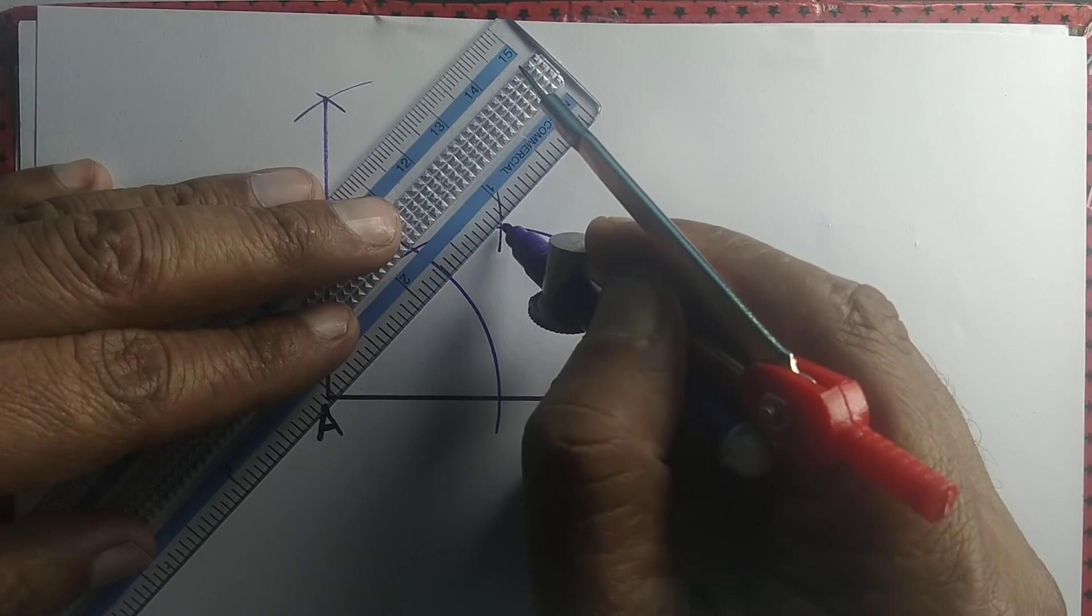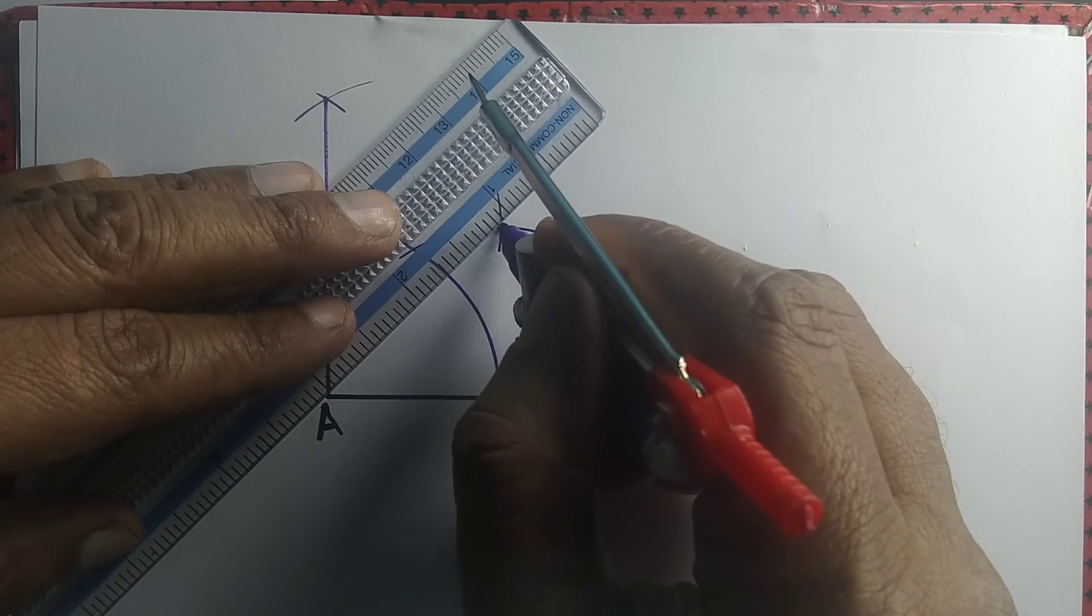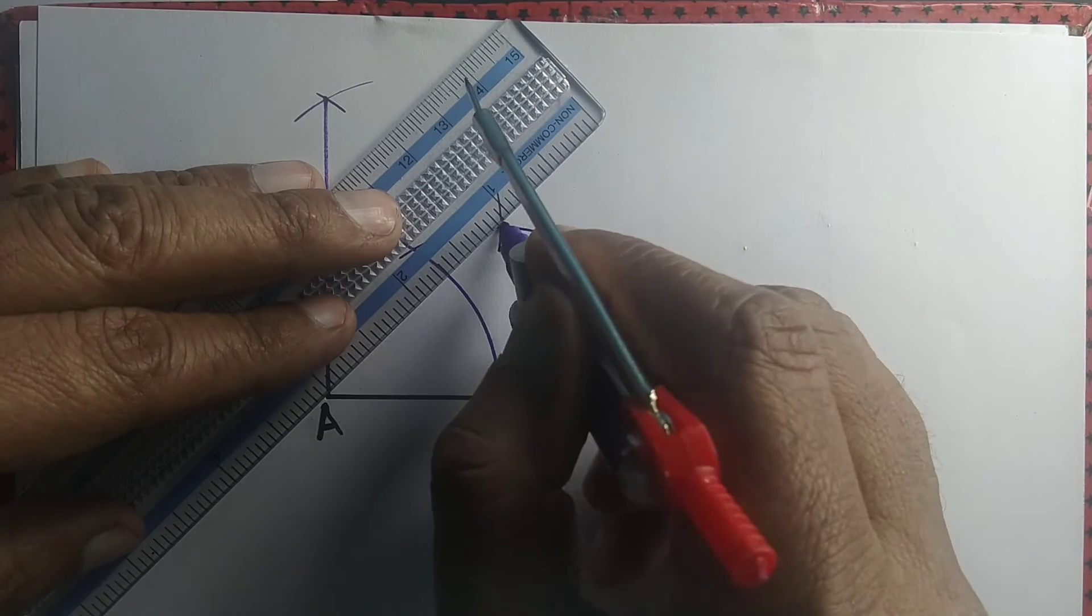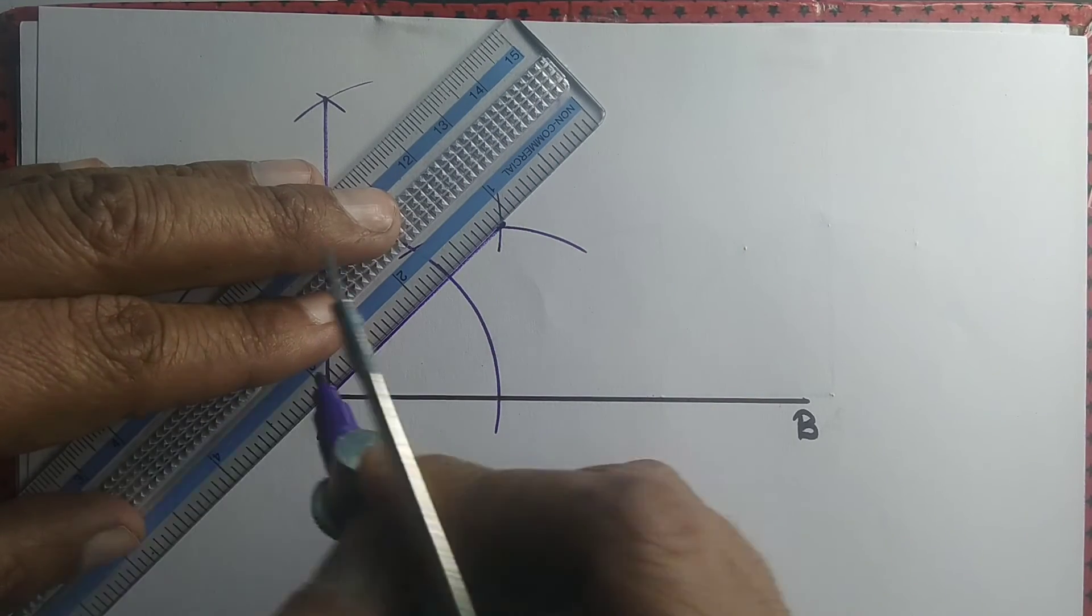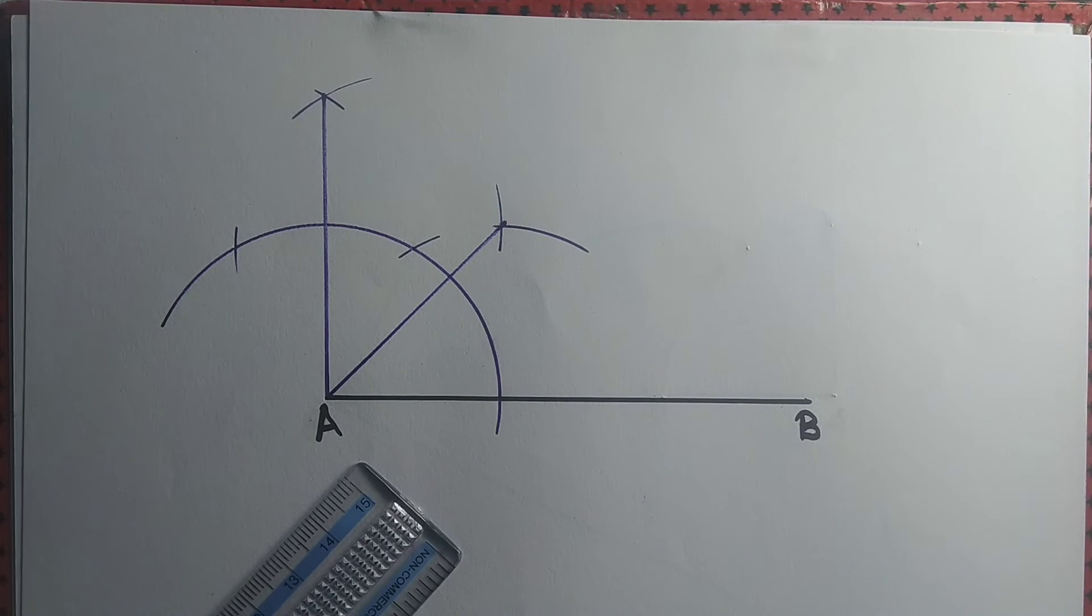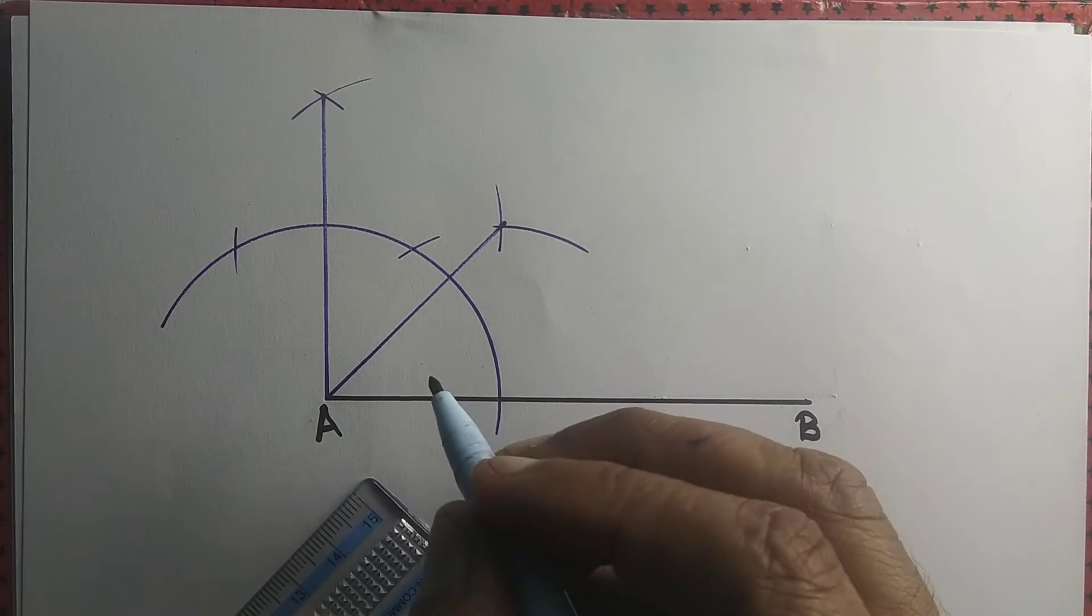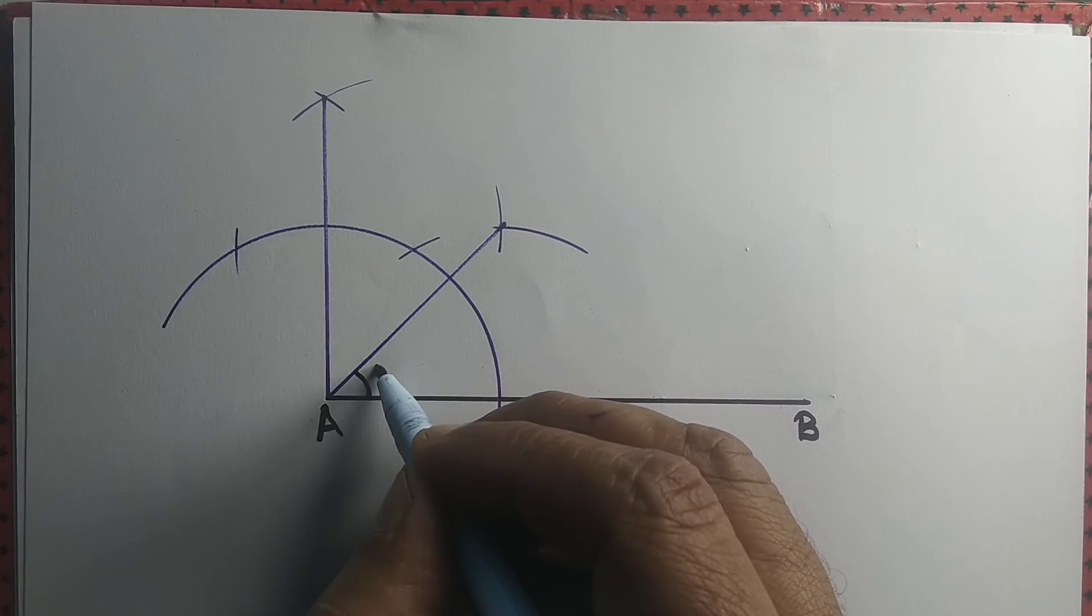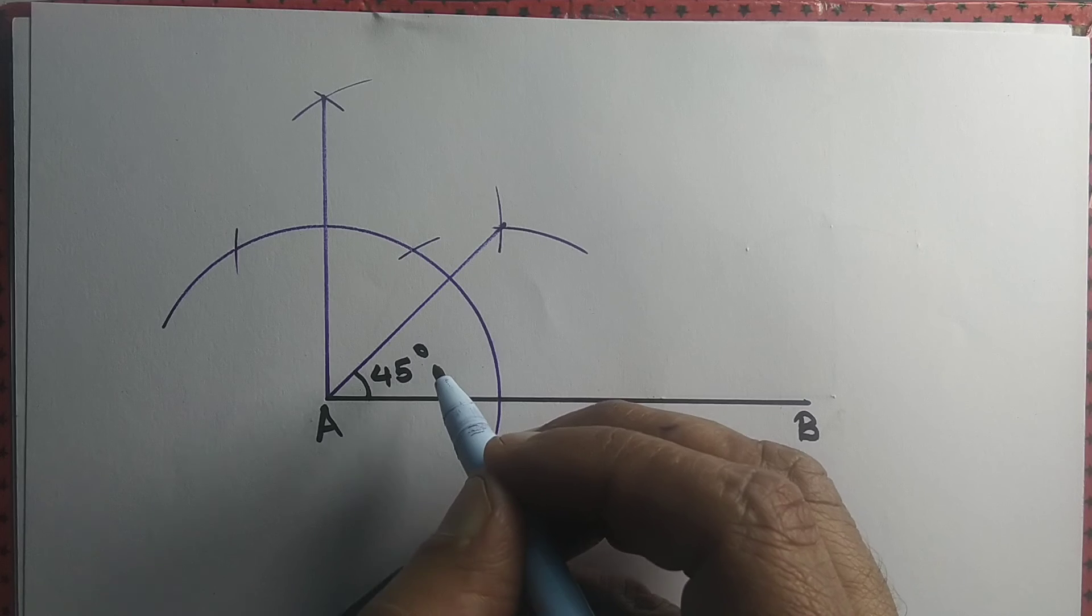Let us join that point with point A. We have halved 90 degrees, and half of 90 degrees is 45 degrees. So angle A equals 45 degrees.